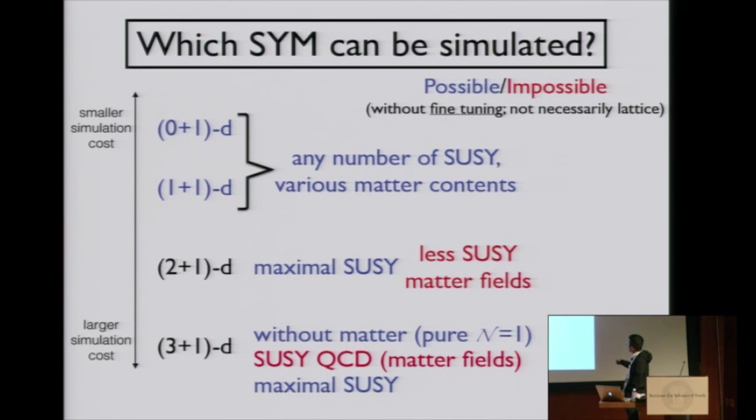When we have less SUSY or we have matter fields, it's hard to study. In four-dimension, four-dimensional N=1 pure Yang-Mills without matter fields can be studied on computer. We can study maximally supersymmetric theory, but SUSY QCD is difficult.